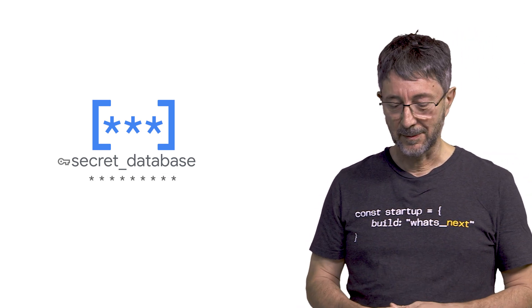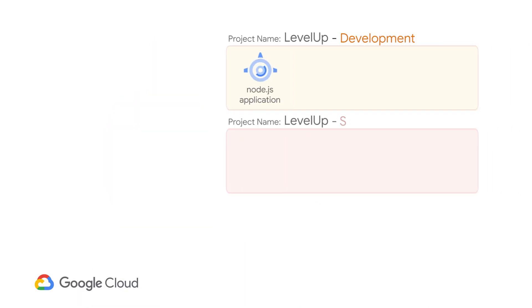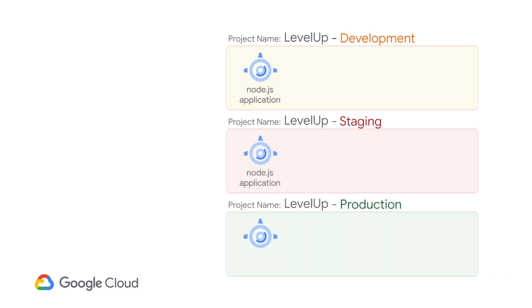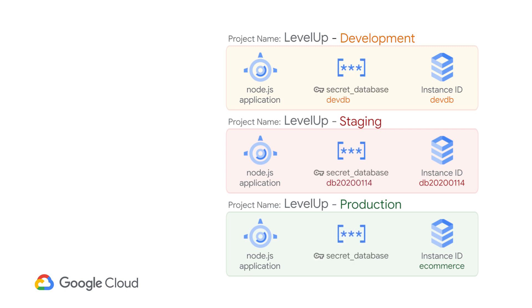So how does the Secret Manager work? The Secret Manager is just a key-value store. The key is the name of the secret, and the value is the actual piece of information that you want to hide — that is the secret. Your App Engine application is going to get the name of the secret and ask the API to give you the actual secret value. If you do development the proper way, you should have a project for development, a project for staging, and a project for production. The secrets are per project, and you can use the same app.yaml for every project. This is something you can just cross off the list and never worry about.